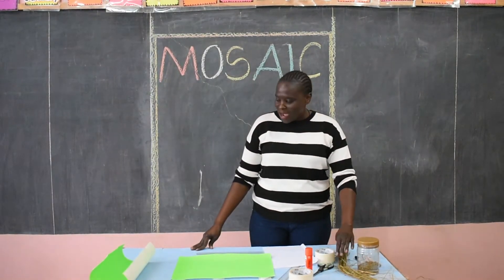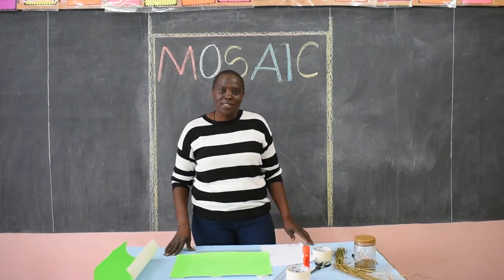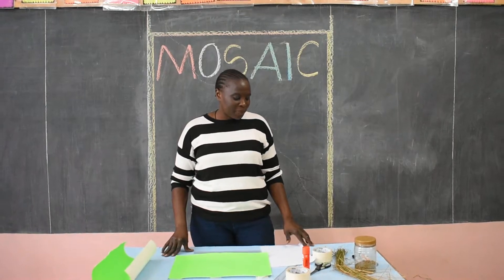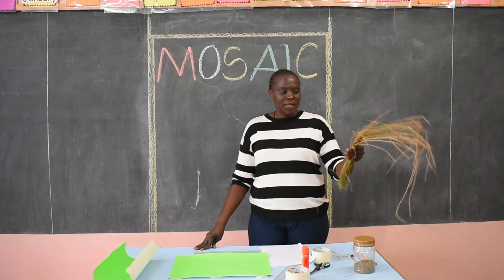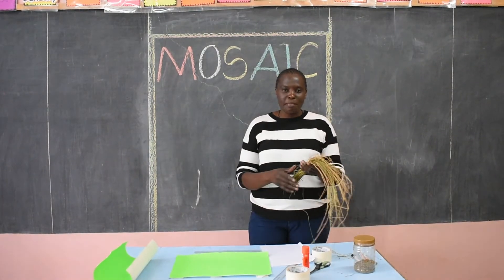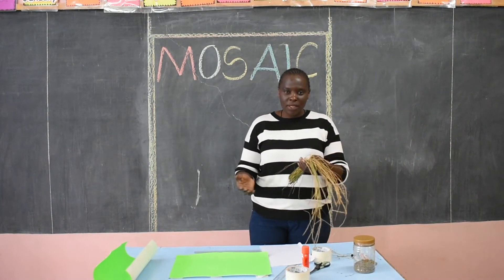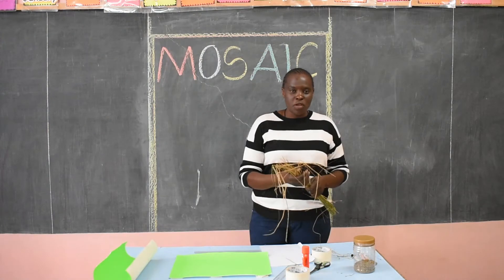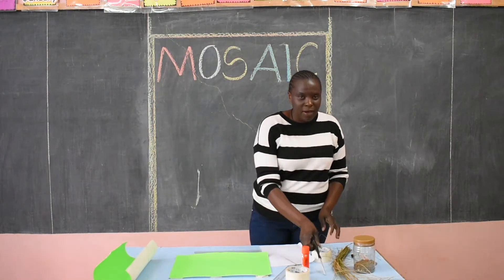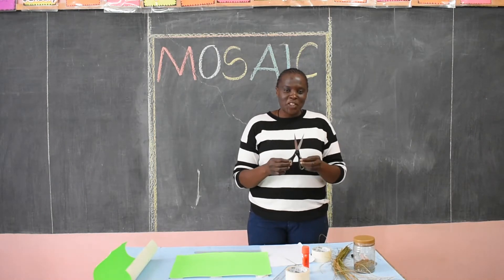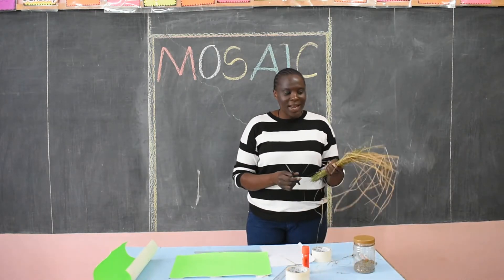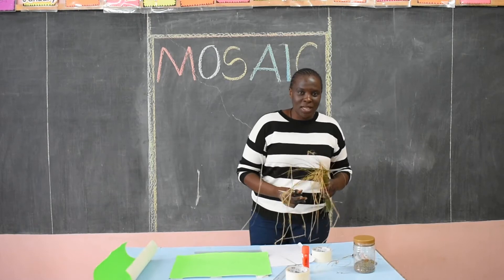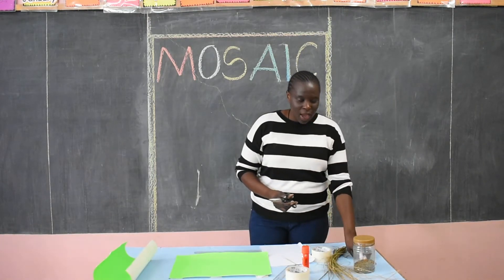Now on my table here I have things that I am going to use to come up with a good mosaic picture. I have grass here. This is locally available. You don't need to go and buy in the shop. You just go outside your house, pluck some grass, then you come and use it in doing your mosaic. I also have scissors. This one is going to help me cut the grass into small pieces so that they are easy to stick on a piece of paper.